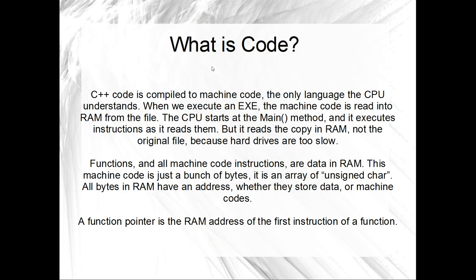The first thing about function pointers is to really ask: why is it possible to create a pointer to a function in the first place? Like, what does that even mean? You get a good idea of this when you consider that C++ code is compiled to machine code. Machine code is the only language that the CPU understands. So when we execute an EXE, what happens is that the machine code of the EXE is read from the disk, or the USB drive, or whatever, and the CPU starts at main and just starts reading instructions, one after another, executing them as it goes.